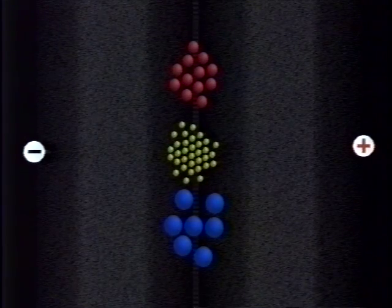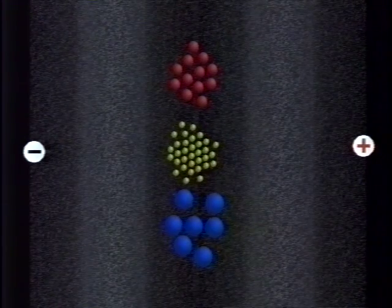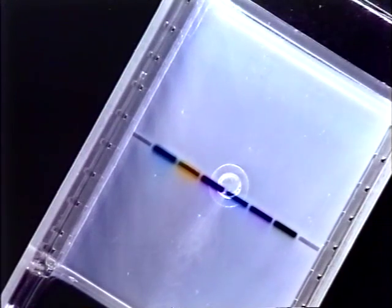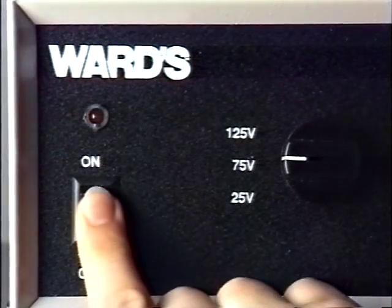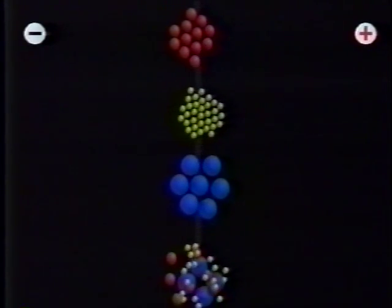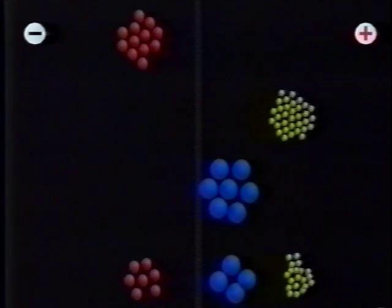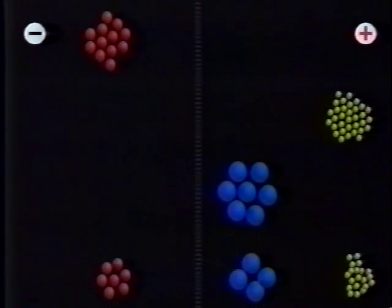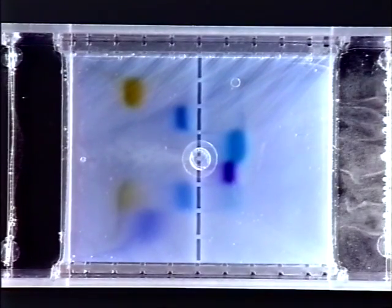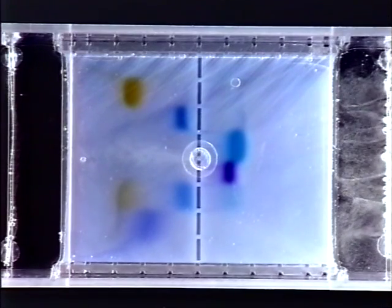The gel itself exerts a frictional resistance, acting as a molecular sieve to separate the moving macromolecules. Various dyes and a dye mixture show how this works. Energize and the molecular race begins. The smaller molecules will migrate faster and so travel farther. Turning off the power will stop the molecular migration. The dyes have separated as predicted, with the smallest macromolecules racing ahead and the largest barely making it off the starting line.